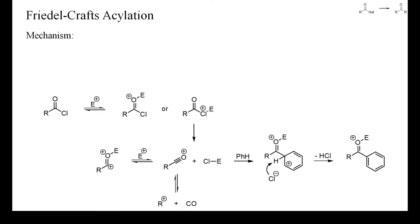Acylium cations, where the corresponding R-group may form an unreactive carbocation, such as those derived from phenylacetic acid or pivalic acid, readily decarbonylate and can cause the formation of alkylated instead of acylated arenes.